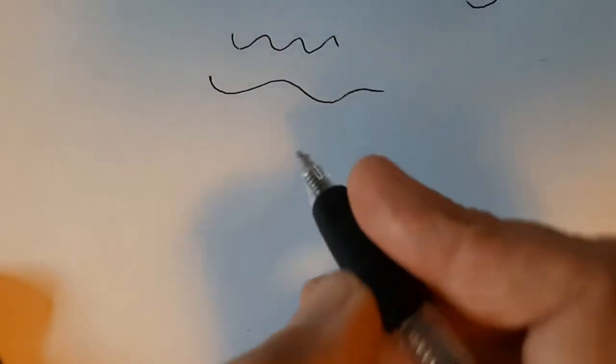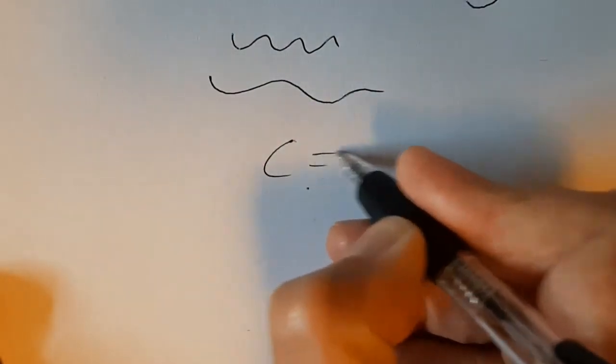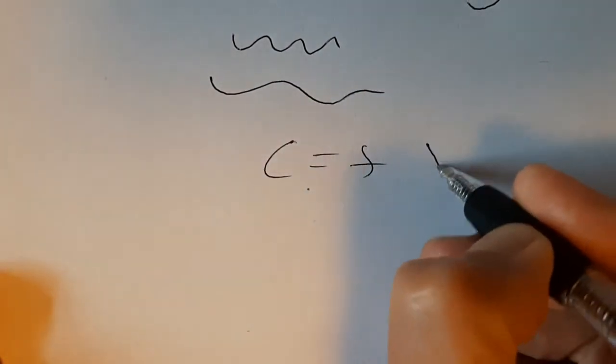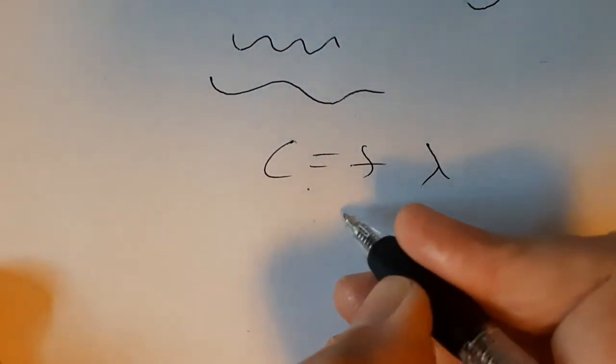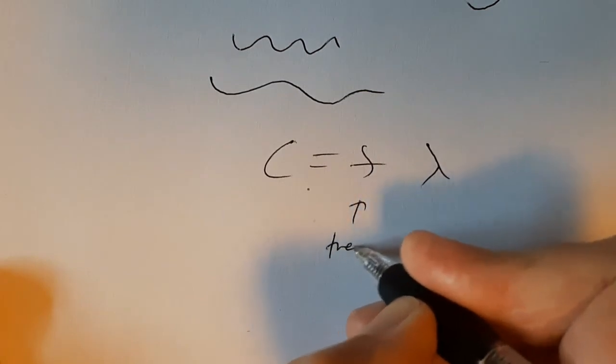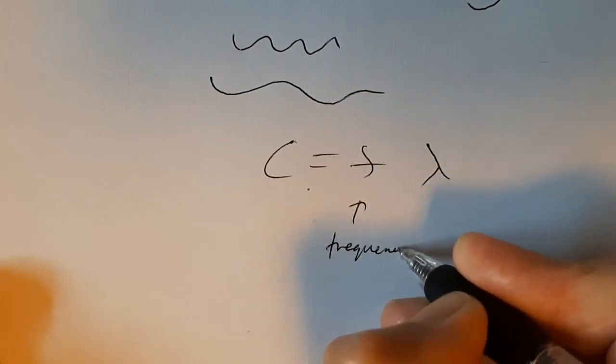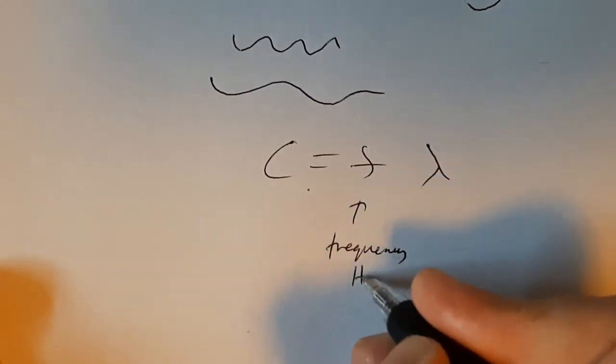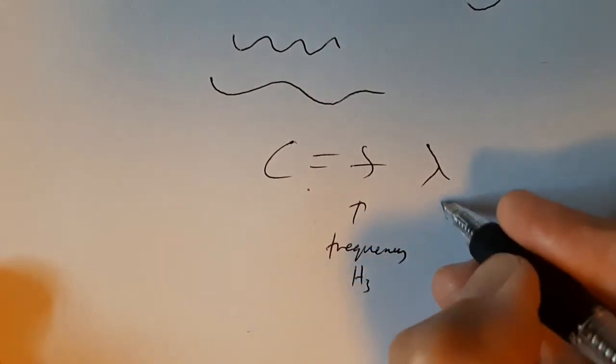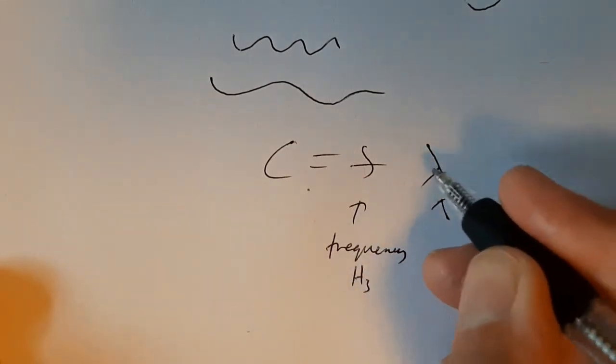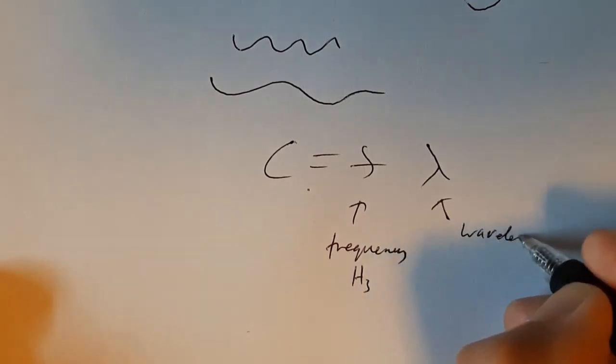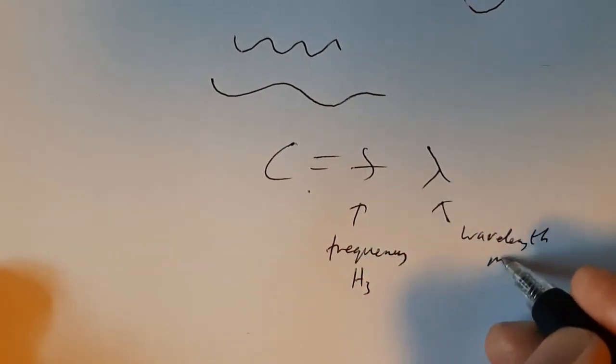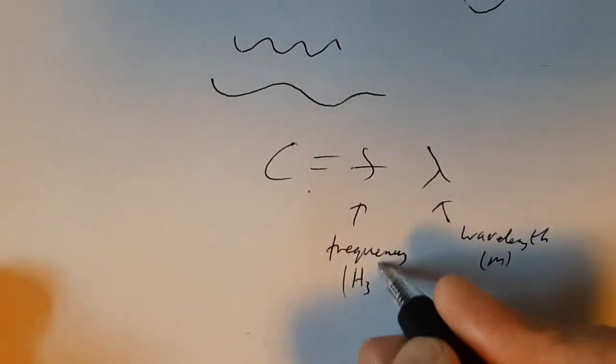I'm just going to stick in a bit of maths now. Very important equation, C equals F lambda. I don't think there's anything difficult about this equation other than the fact that we've got some letters that don't quite seem to stand for the right thing. F is frequency. That's measured in hertz. Lambda, that's a Greek letter, is wavelength. And that's measured in meters.